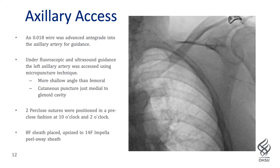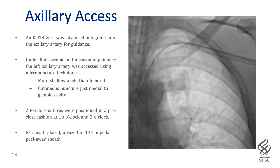After identifying our landmarks, an 0.018 wire was advanced antegrade into the axillary artery for guidance — so-called wire-guided access — to minimize repeat contrast injections. Entering just medial to the axilla and using a more shallow angle than a typical femoral approach, under fluoroscopy and ultrasound, we accessed the left axillary artery in the third segment using micropuncture technique. Two Perclose sutures were positioned in a pre-close fashion at 10 o'clock and 2 o'clock, and an 8-French sheath was placed, upsized to the 14-French Impella peel-away sheath.